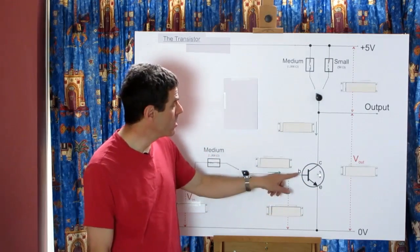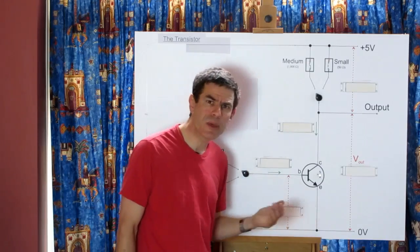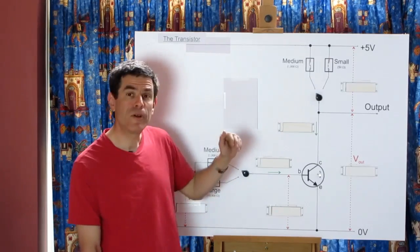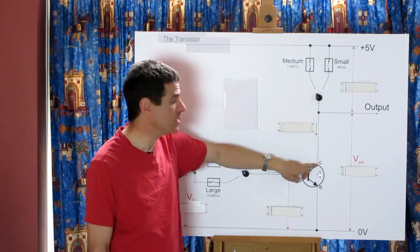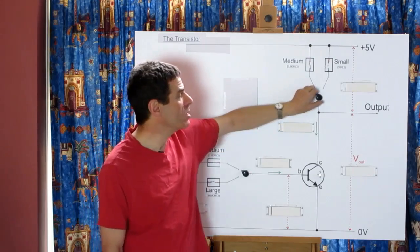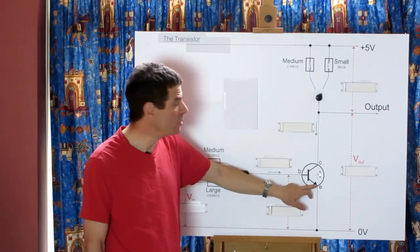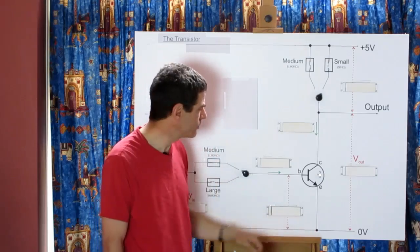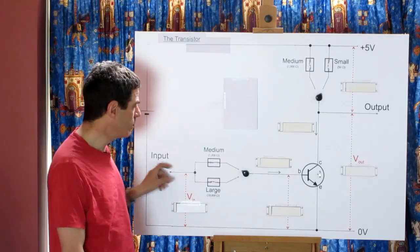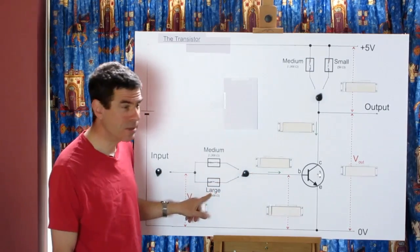Roughly speaking, the base is what controls the amount of current that can flow from the collector to the emitter. To make it do something we need to provide power. I have a 5 volt power supply connecting through a resistor to the collector. We're going to start with a small value of 50 ohms. The emitter is connected to zero volts, and the base is connected to a control input through a resistor — we're going to start with a large resistor of 10,000 ohms.